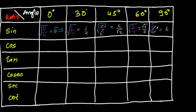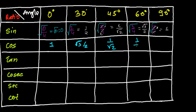Now for cosine, just copy and paste the sine values in reverse order. Copy sine 0° value into the cosine 90° box, and root 3 over 2 goes into cosine 30°. The cosine 90° equals sine 0°, cosine 60° equals sine 30°, cosine 45° equals sine 45° so it's also 1/√2, cosine 30° equals sine 60°, and cosine 0° equals sine 90° = 1.